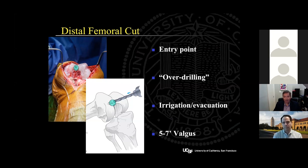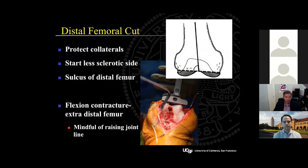In most cases, the guide is set between five to seven degrees of valgus, which can be personalized for the patient if you get pre-op scanograms, though clinically there hasn't been shown to be any benefit to this approach. It's very important at this stage to place Hohmann or Z-retractors between the femur and the collateral ligaments to avoid iatrogenic injury. I teach my residents to always start cutting the less sclerotic side first to avoid skiving and creating a non-flat surface. Before I make the distal femoral cut, I place an angel wing through the slot, ensuring it exits right at the sulcus indicated by the diagram for an appropriate resection depth. Based on the degree of flexion contracture present, one can consider cutting extra distal femur, recognizing that raising the joint line can create mid-flexion instability and patellar issues.